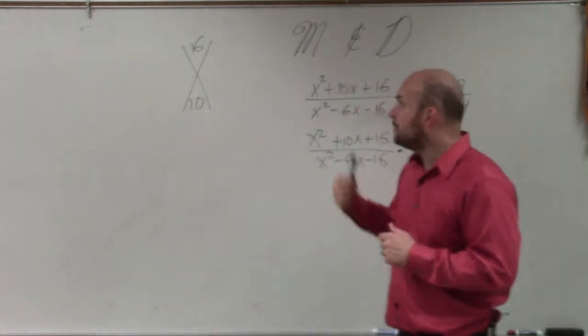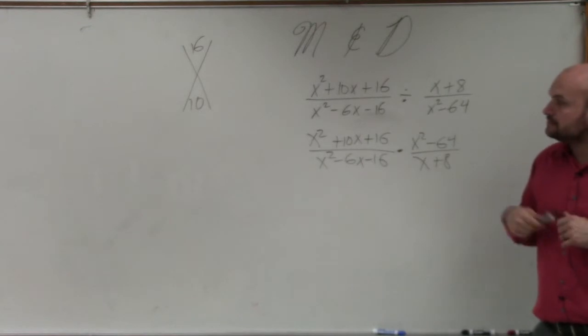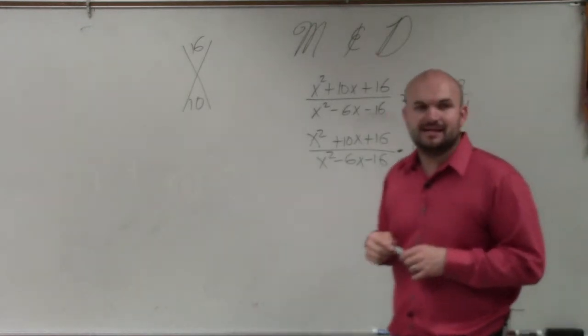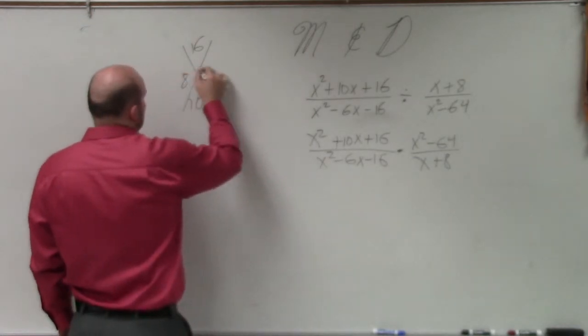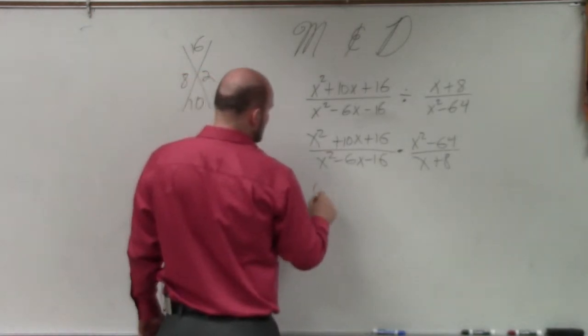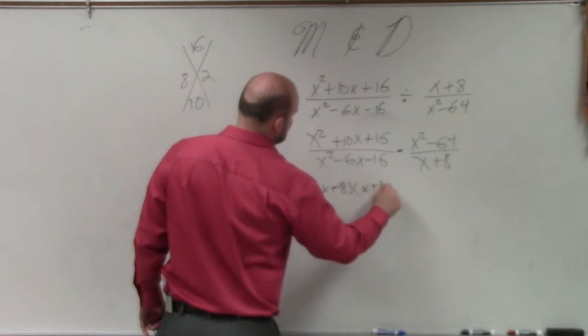So let's think about it. What two numbers that are positive multiply to give us 16 and add to give us 10? Positive 8 and positive 2. So I can write this as x plus 8 times x plus 2.